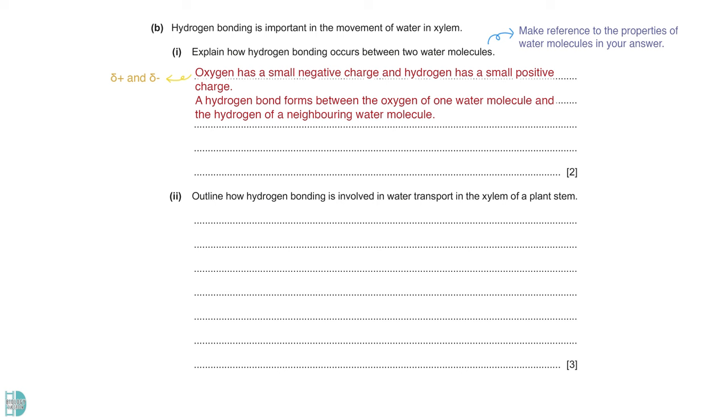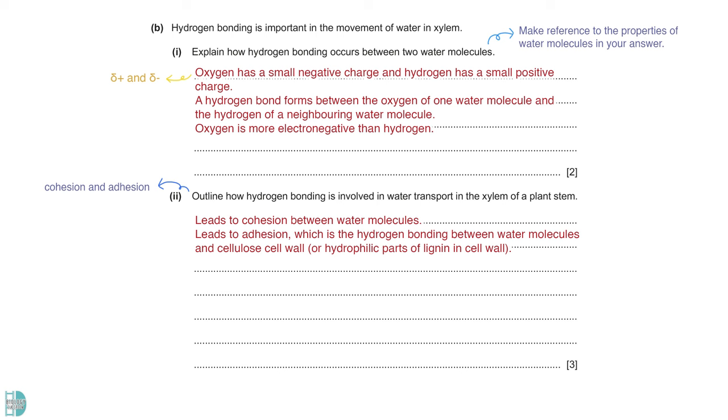Outline how hydrogen bonding is involved in water transport in the xylem of a plant stem. Hydrogen bonding leads to two forces that move water in the xylem, cohesion and adhesion. Cohesion is the attraction between water molecules. Adhesion is the hydrogen bonding between water molecules and the cellulose cell wall. It can also form between water molecules and the hydrophilic parts of lignin in the cell wall. Due to these attractions, water forms a continuous column. This continuous column is pulled up by transpiration pull, mainly caused by the evaporation of water in the leaves.